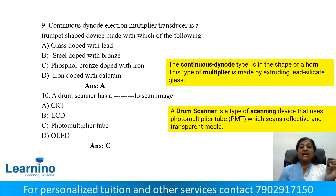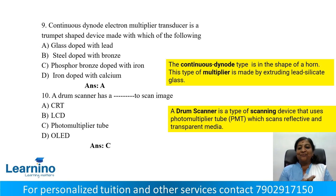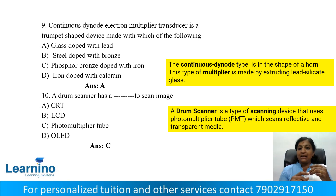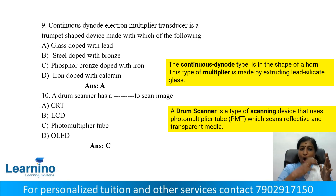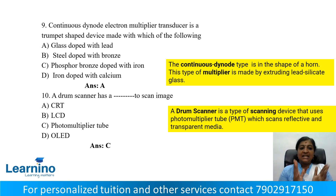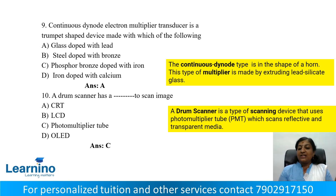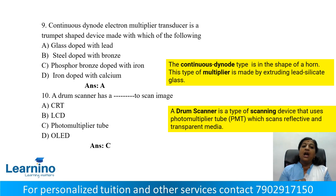Question number 9: A continuous dynode electron multiplier transducer is a trumpet-shaped device made with which material? Options: A — glass with lead, B — steel with bronze, C — phosphor bronze with iron, D — iron with calcium. This horn-shaped multiplier is made using lead silicate glass, so option A is the correct answer.